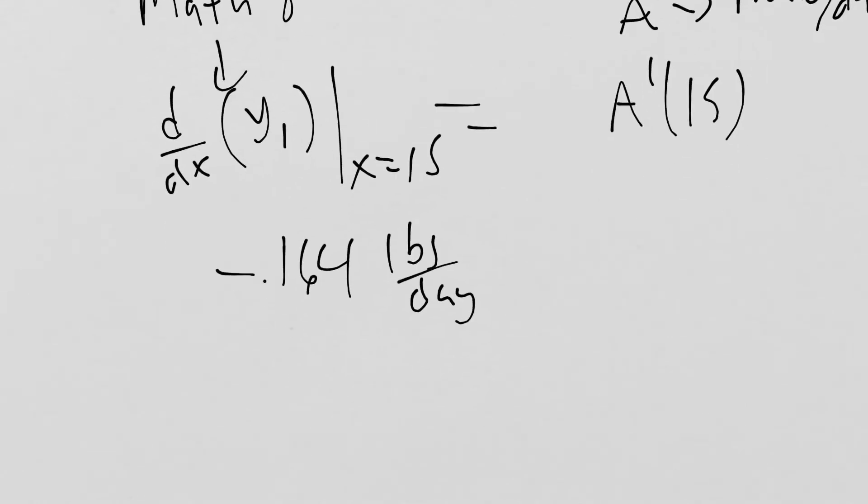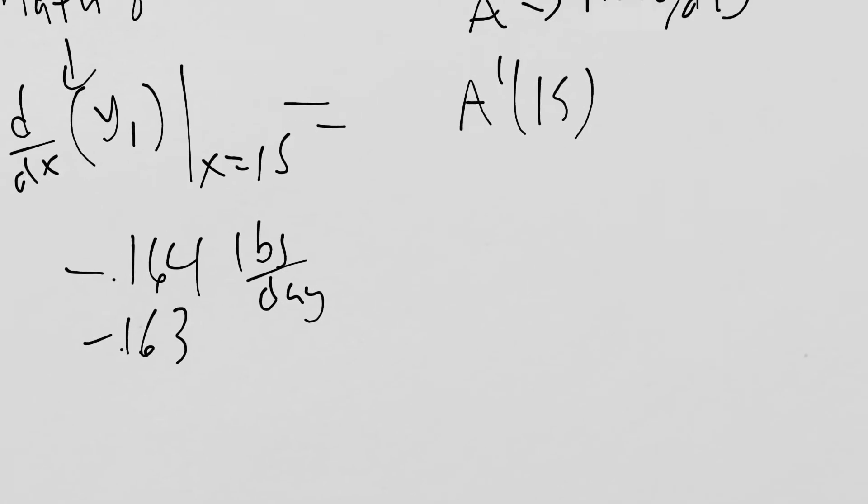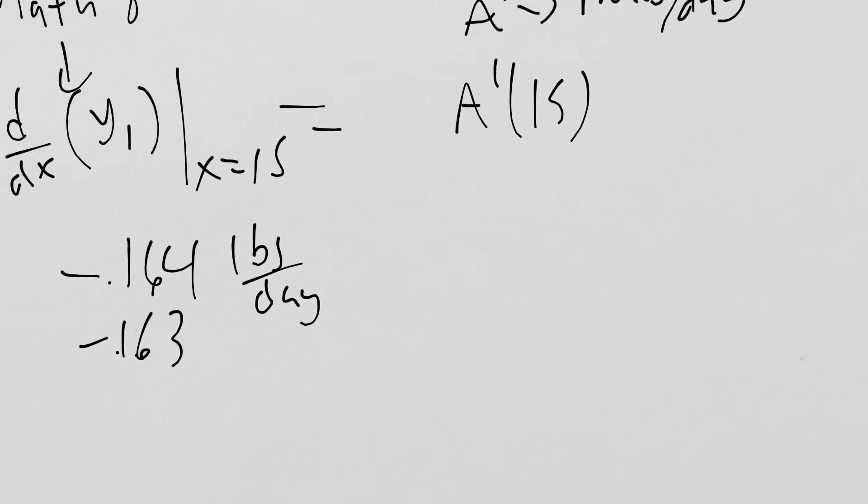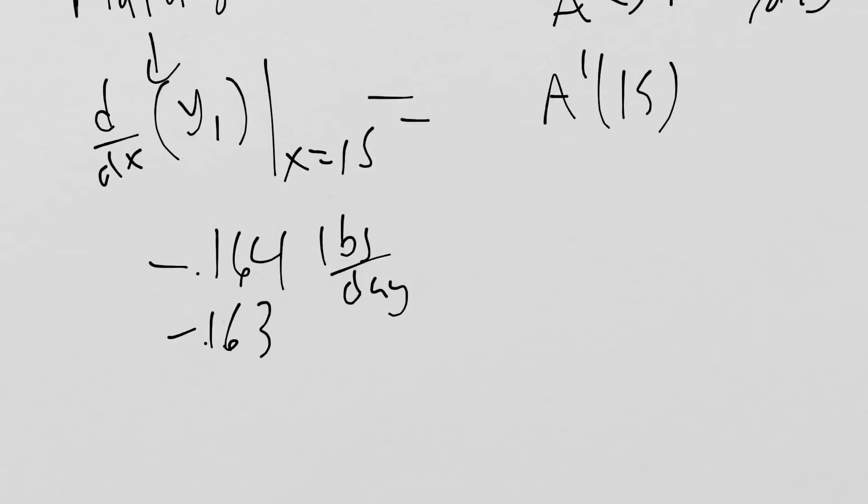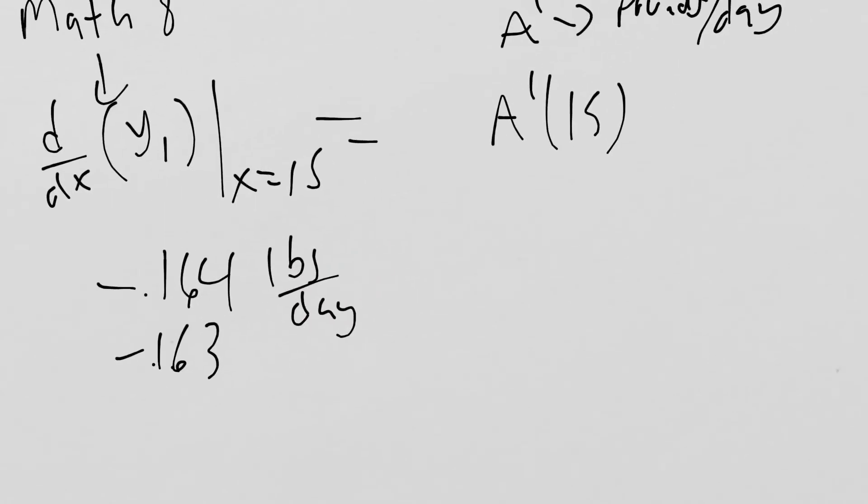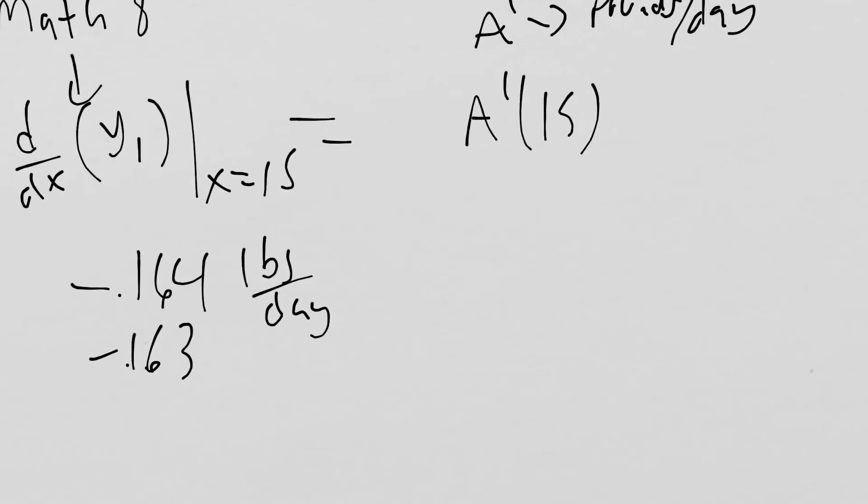It looks like they'll also accept -0.163 as well for rounding. Then it asks us to interpret. What we have to recognize is that this is the instantaneous rate of change of the amounts of clippings in the bin at this exact time.